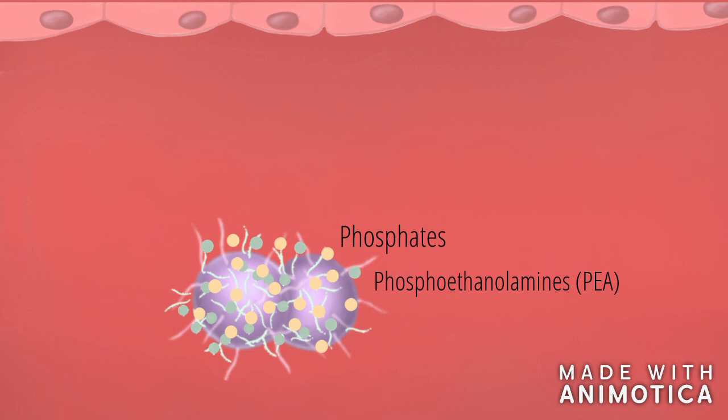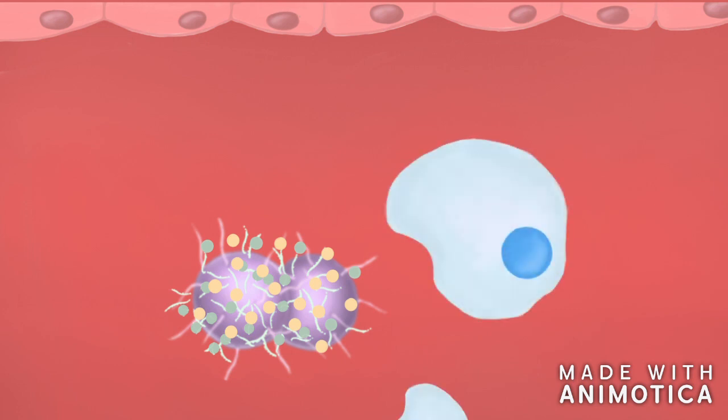In this case, the phosphates and the PEAs are added to lipid A, a subunit of LOS. It turns out the level of phosphorylation and phosphoethanolaminylation of lipid A is defining for the occurrence of sepsis. A high level, meaning a lot of conformational change, is correlated with an increased immune tolerance.